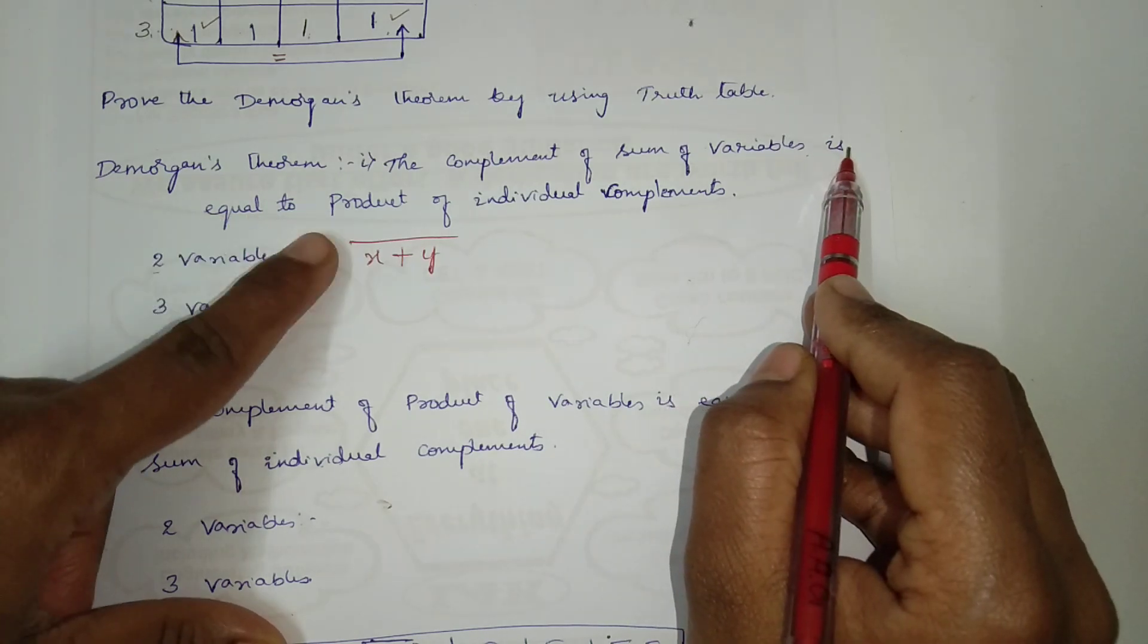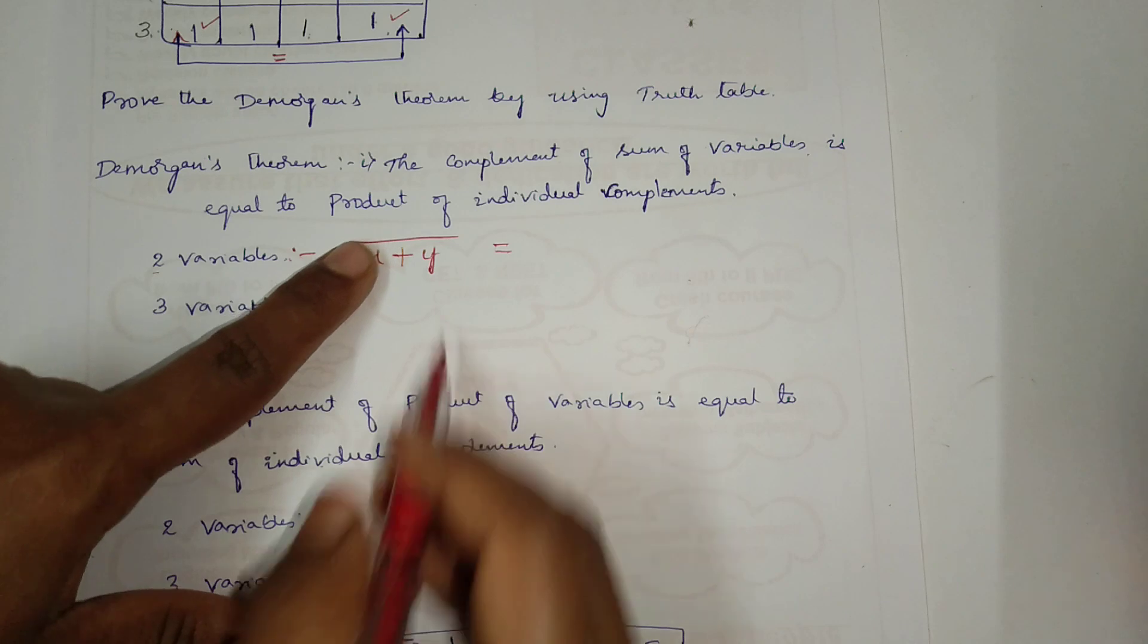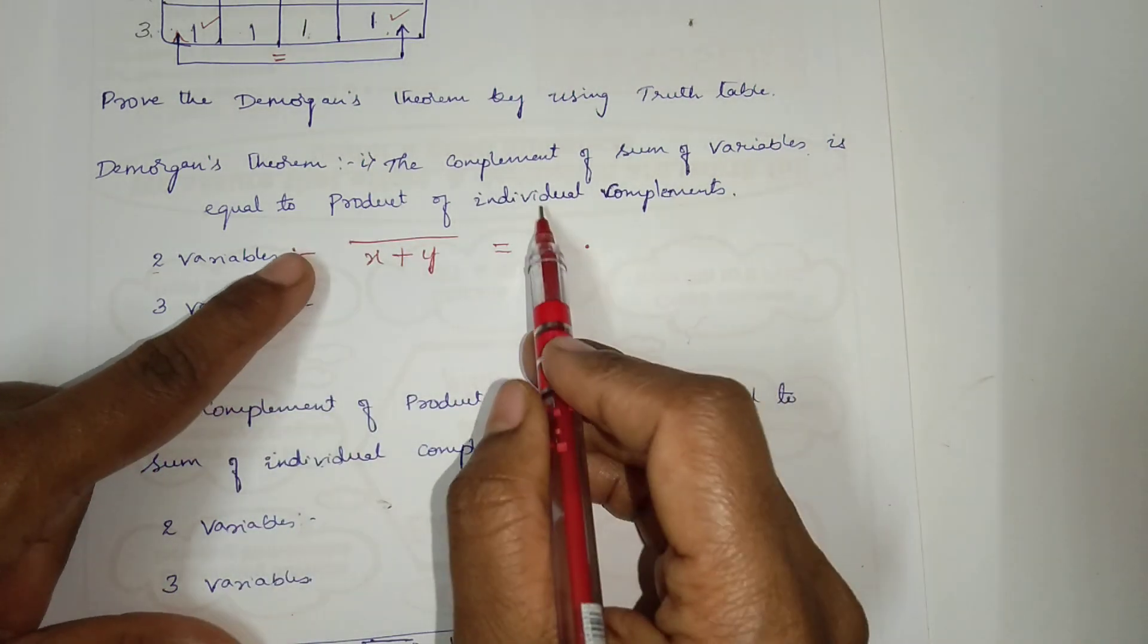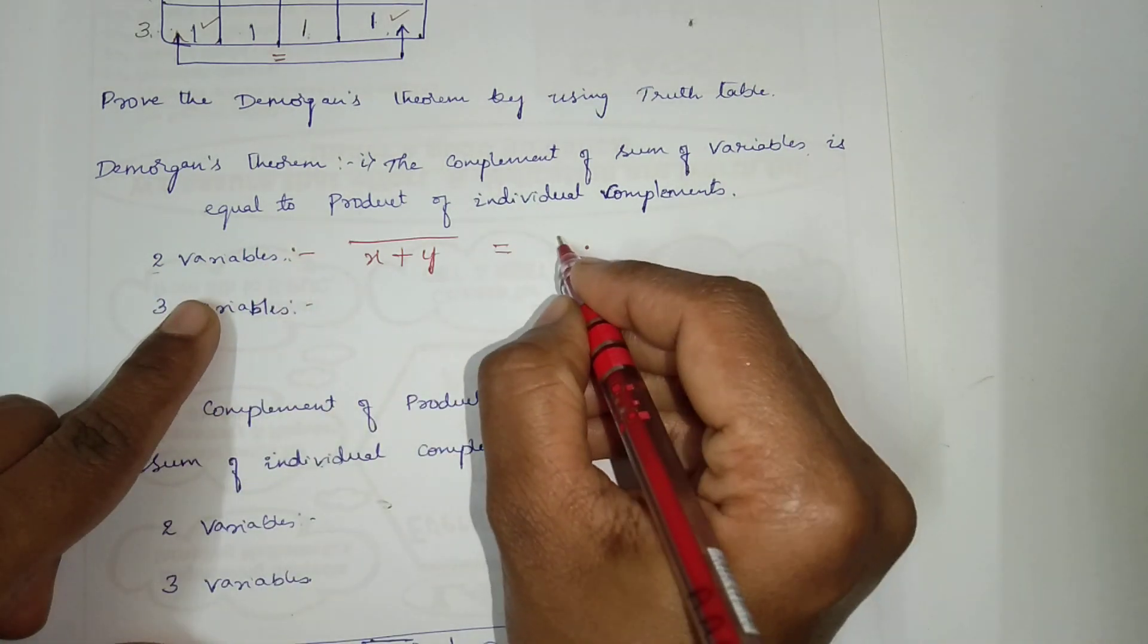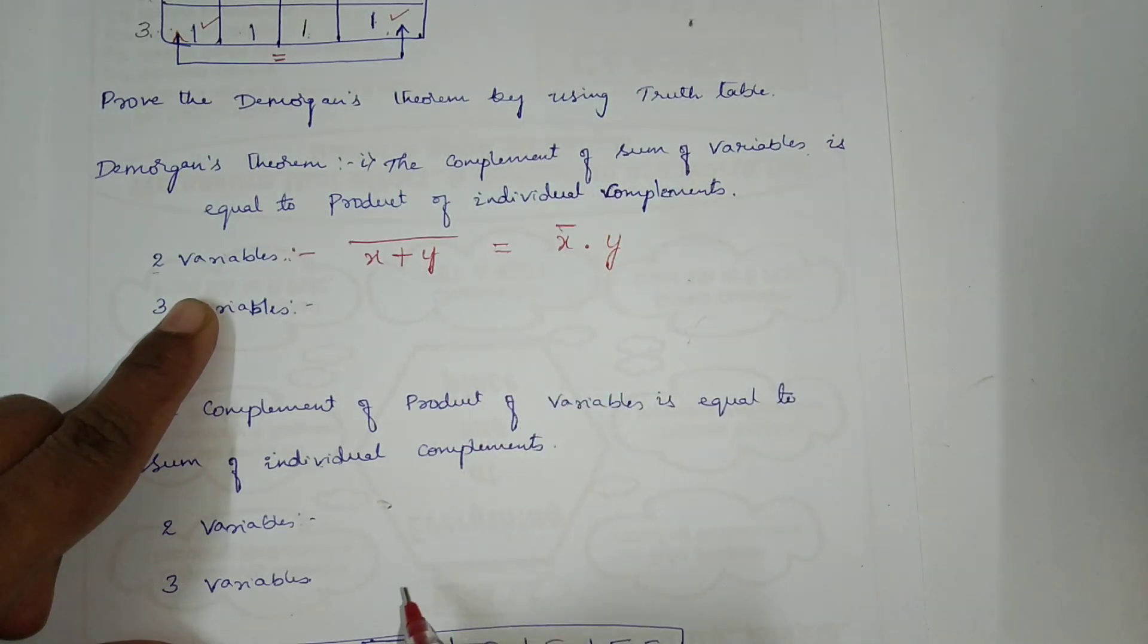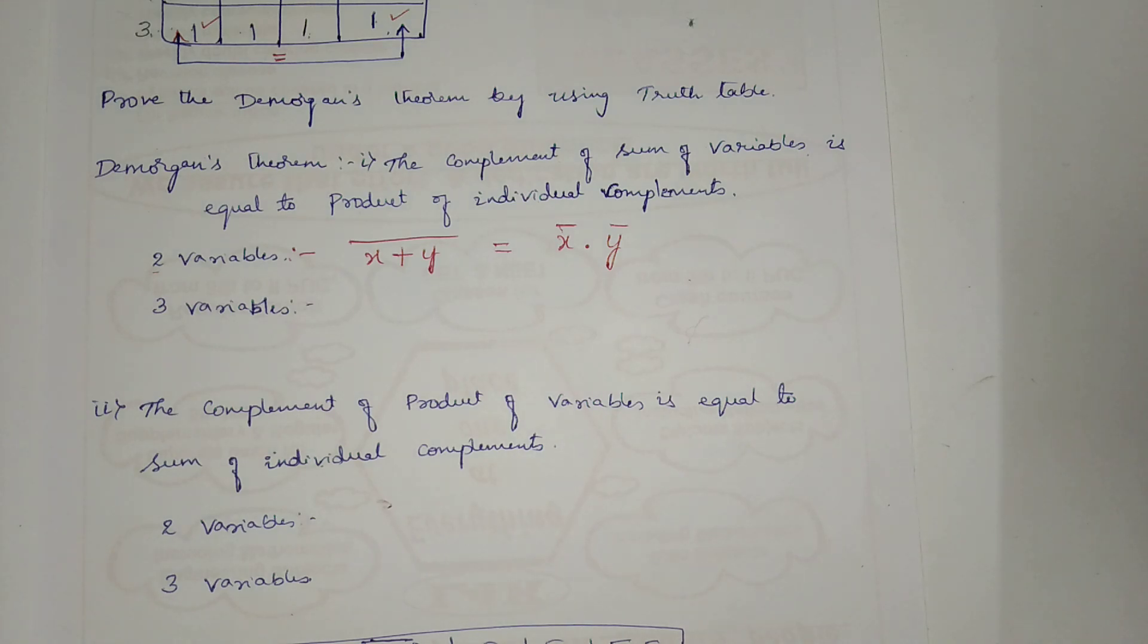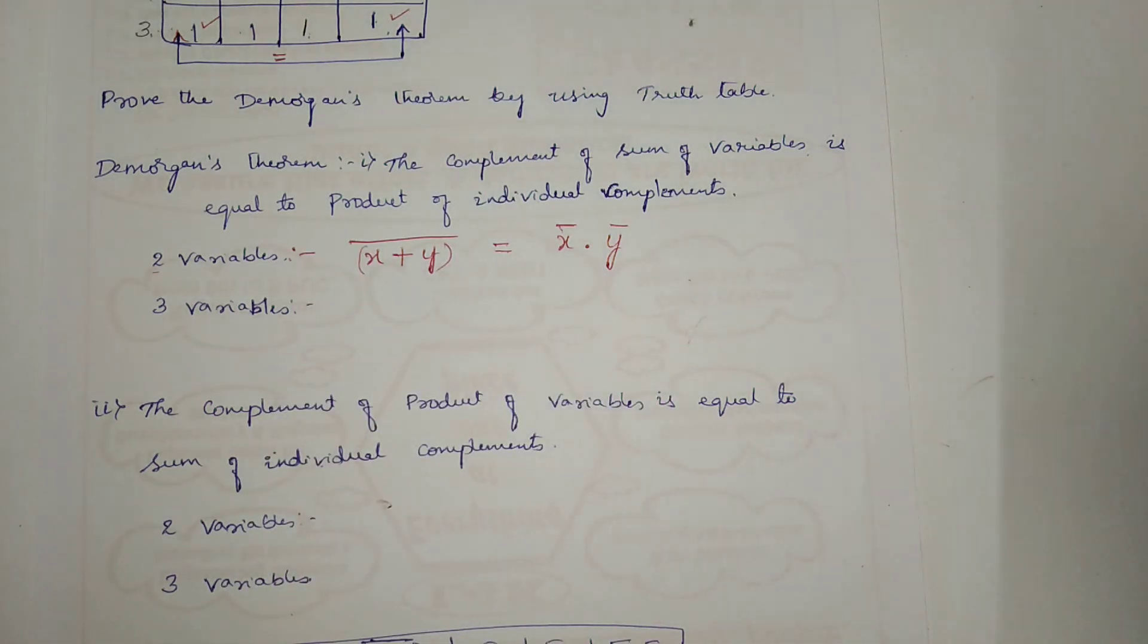See how I will write. The complement of, so the complement means bar. The complement of sum of variables. Sum of variables. How many variables I am taking? Two variables. So, x and y. Till here we completed. The complement of sum of variables. How many variables? Two variables. Is equal to, so I have to put equals. Is equal to product of, product means into, product of individual complements. How many variables? Two variables. So, x, y. Individual complements. For this, individually I have to put a bar. And for y, individually. Understood? I can put a bracket here also.